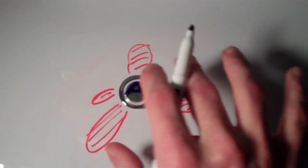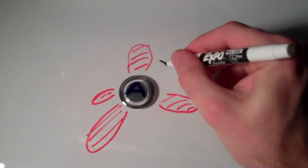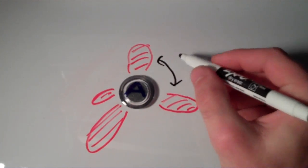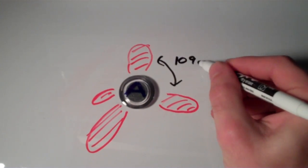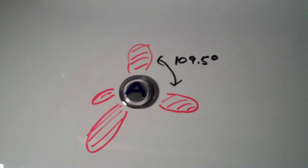So, the angle between any two of these electron groups is 109.5 degrees. And this shape is what we call tetrahedral.